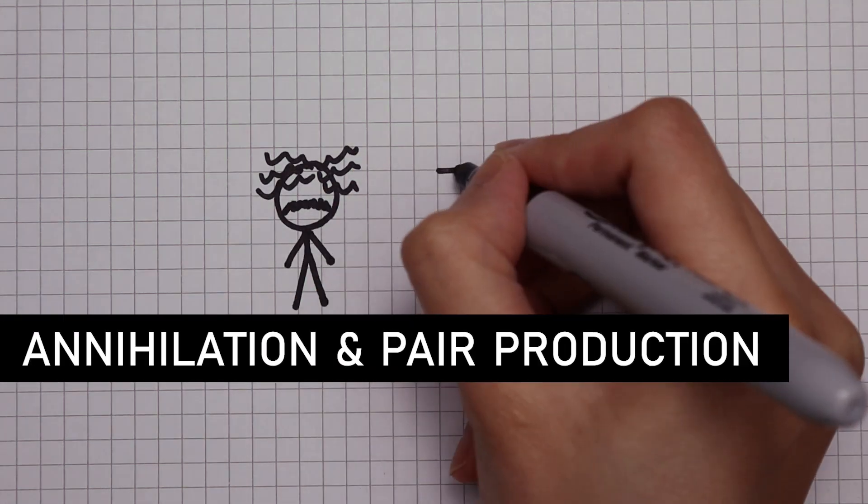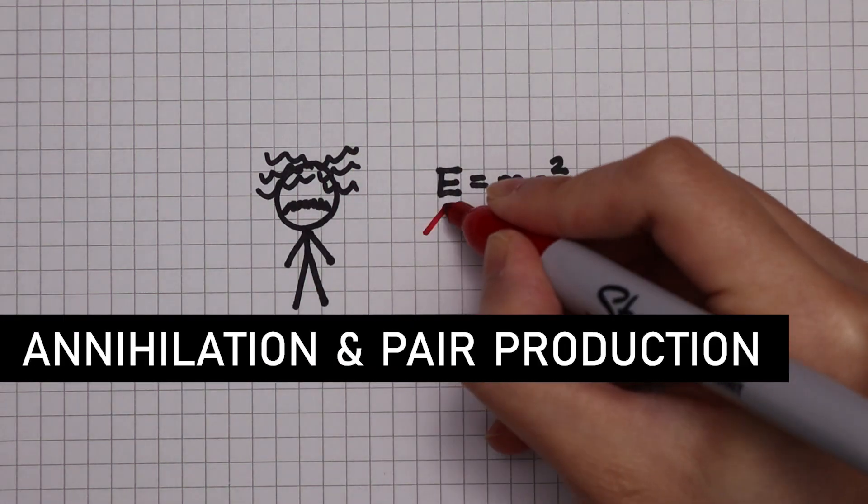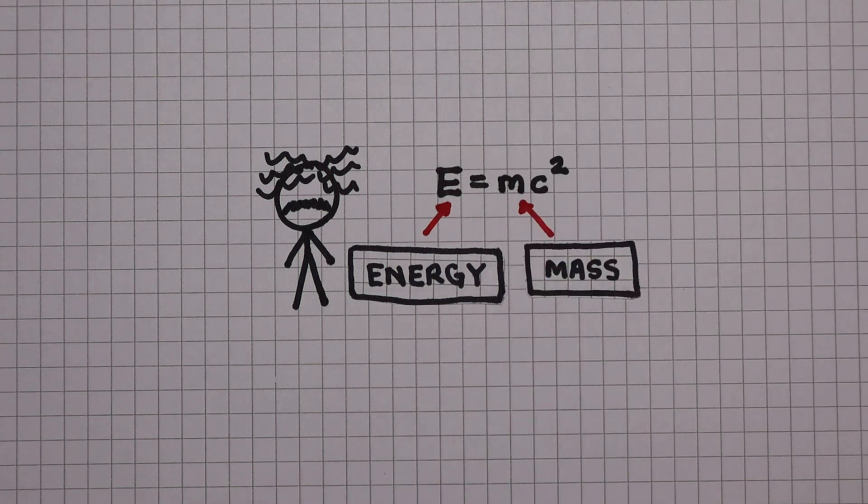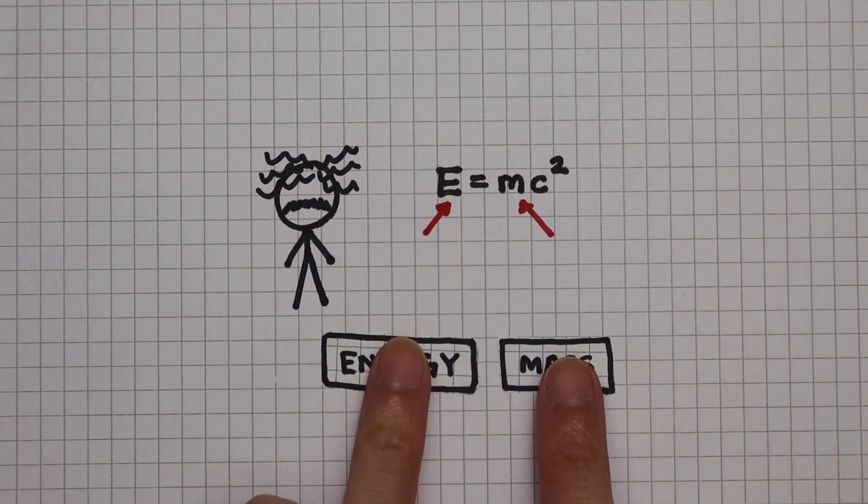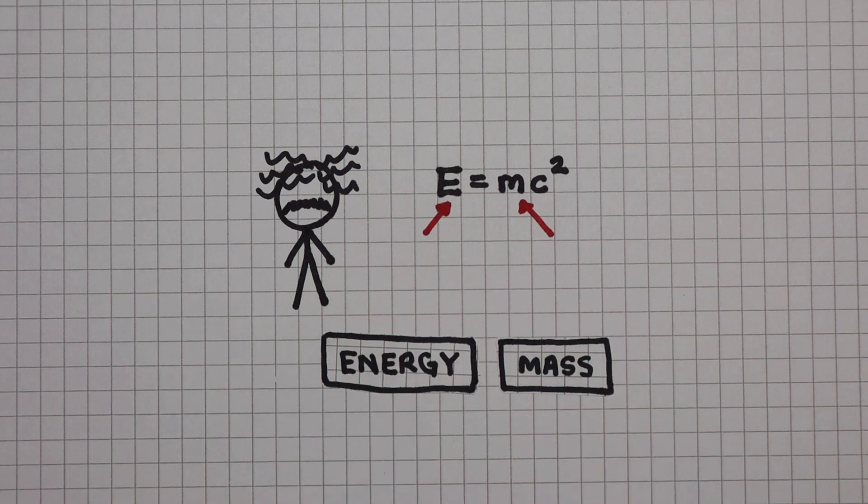E equals mc squared. Einstein's famous equation tells us that energy and mass are basically manifestations of each other. Energy can be converted into mass and mass can be converted into energy.